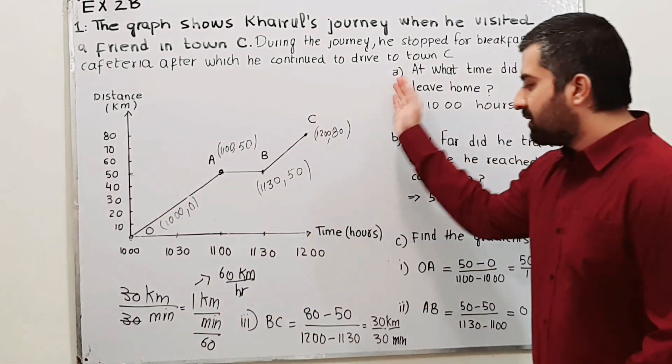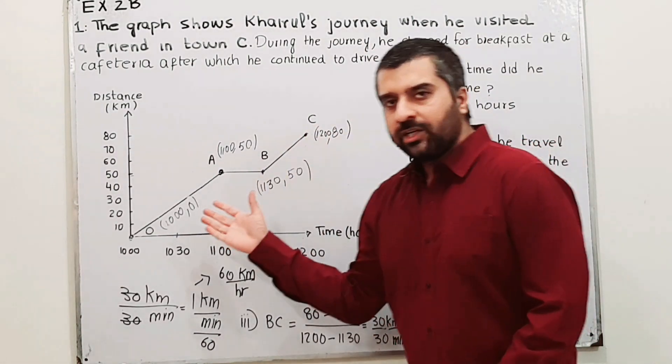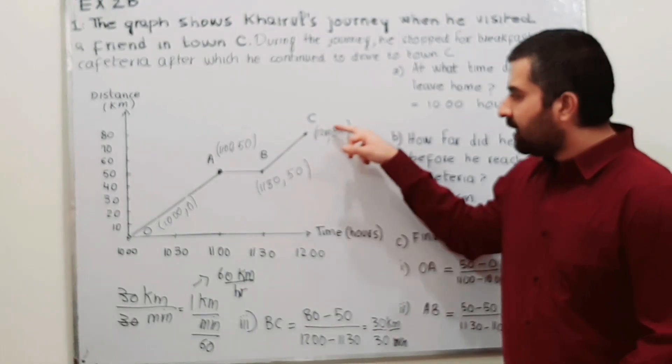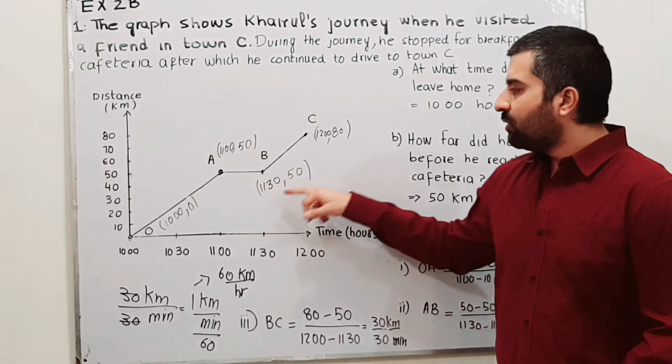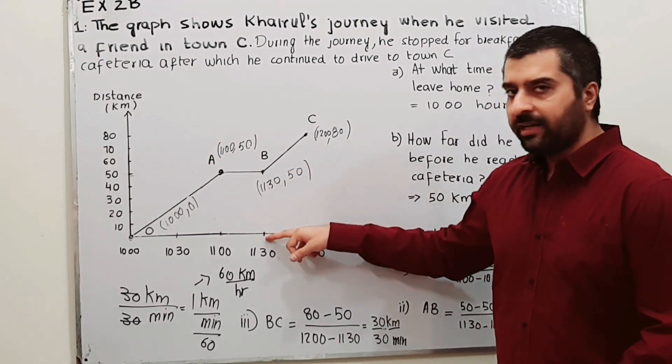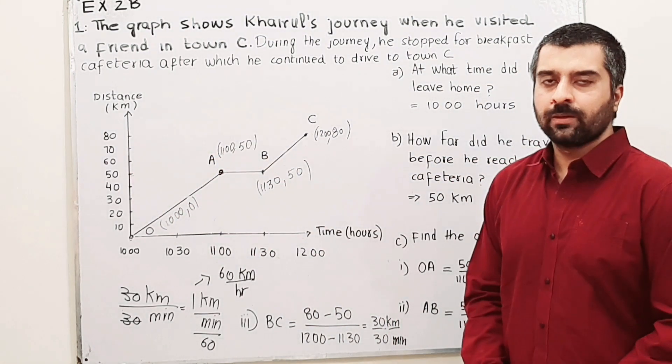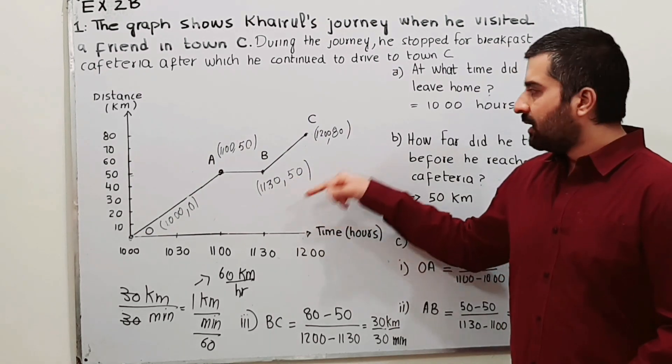What is the gradient of BC? Take two points on BC. The coordinates of C are 1200 hours on x, 80 kilometers on y. And at B, we have 1130 hours on x and 50 kilometers on y. This is x2, y2, this is x1, y1.